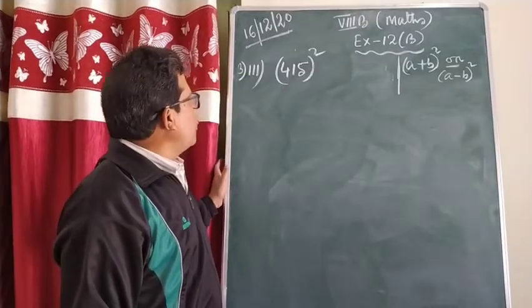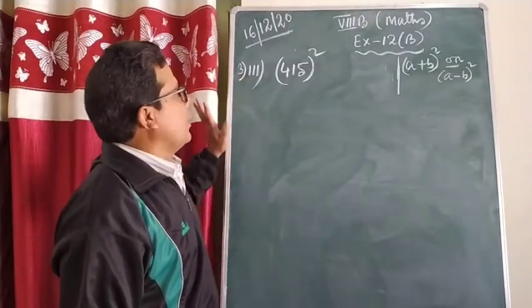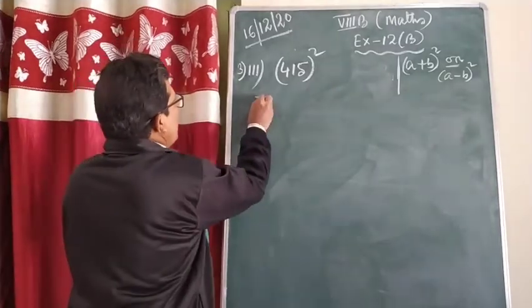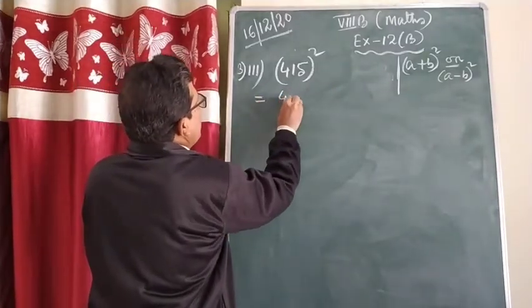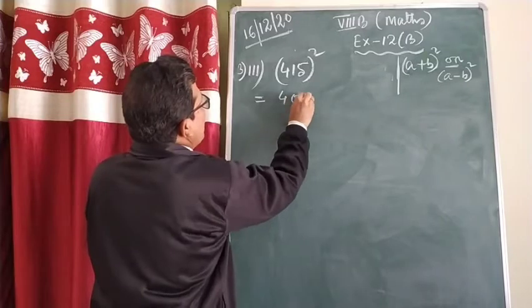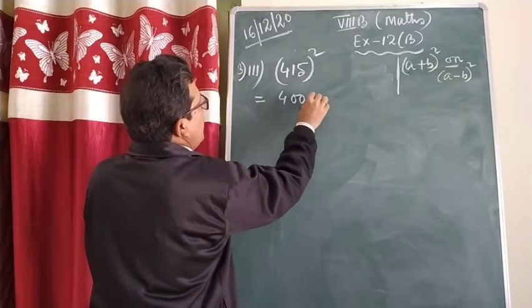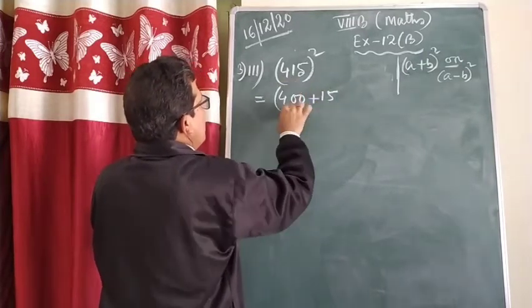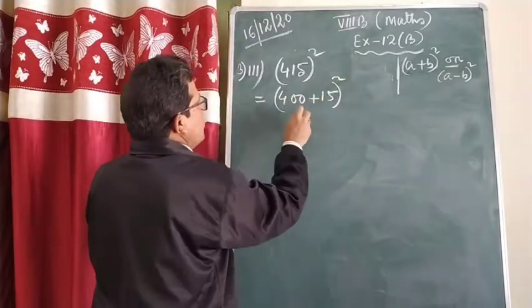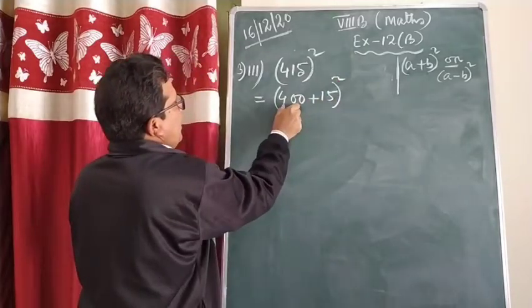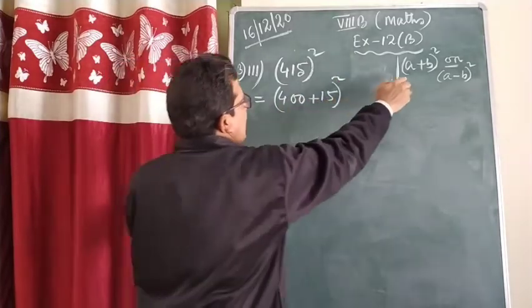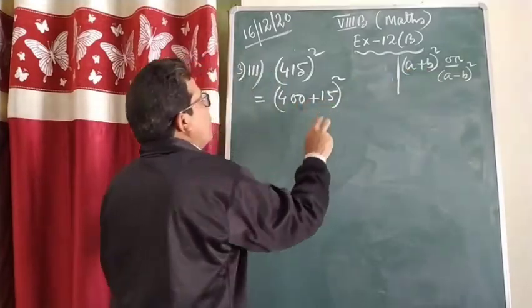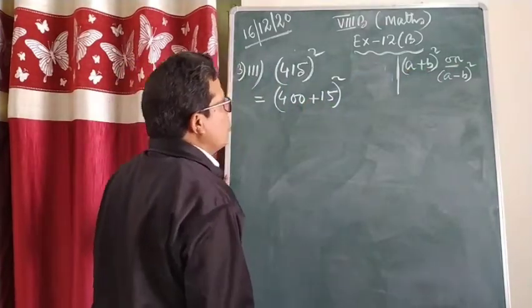Now I am going to solve question number three. Same way — you are already knowing what to do. The easy way: I told you the bigger number's unit place should be zero. So I'll make it (400 + 15)². Now you take 400 as a and 15 as b, so it comes in the form of (a+b)².